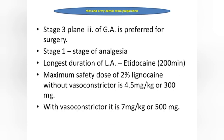The beta blocker with intrinsic sympathomimetic activity is pindolol. In general anesthesia there are four stages — Stage 3, Plane 3 is preferred for surgery. Stage 1 is called the stage of analgesia. The longest duration of action of a local anesthetic is bupivacaine.